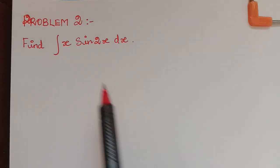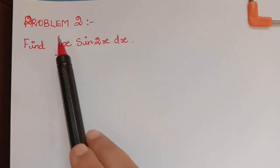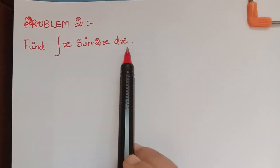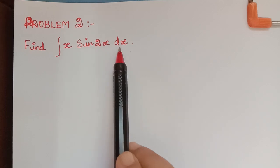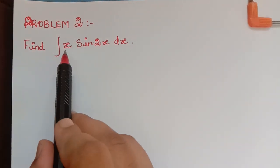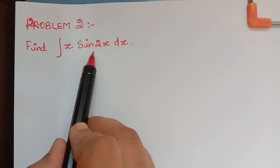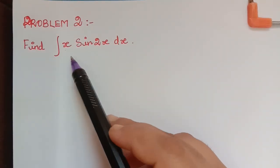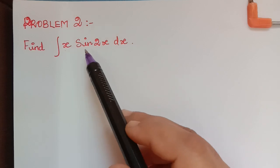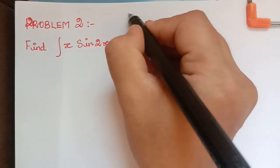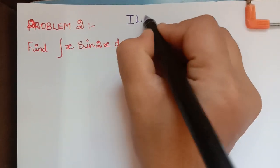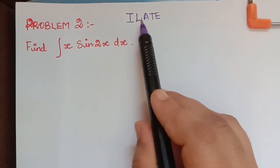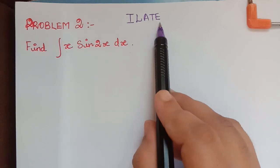Hello students. Under the topic integration by parts, the second problem is integral x sin 2x dx. This is a product of two functions where one function is algebraic and the other function is trigonometric. We have to make the choice of the function u using ILATE. I have explained this very clearly in my previous video.